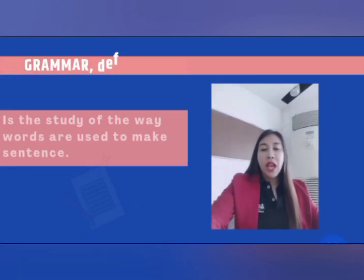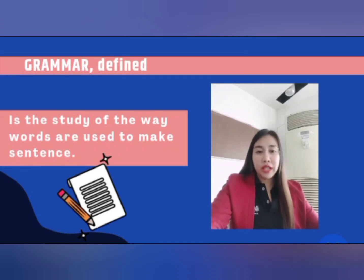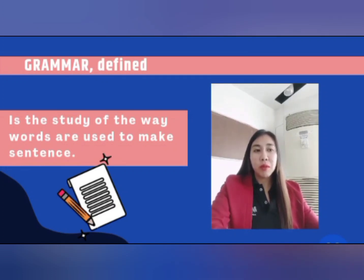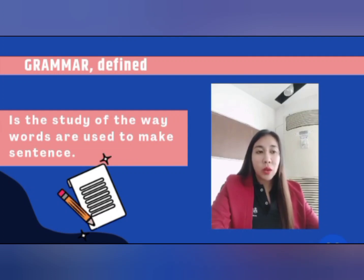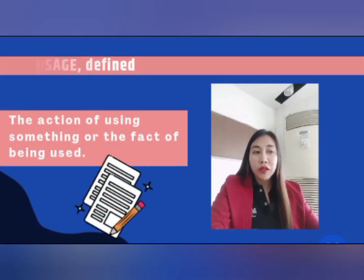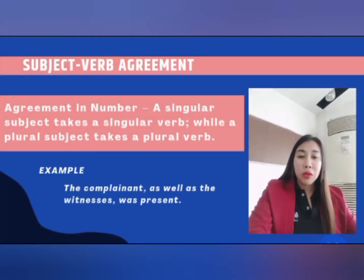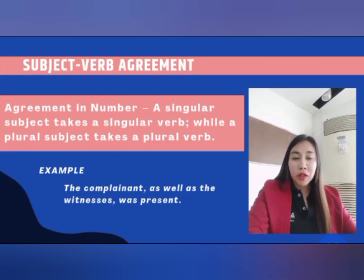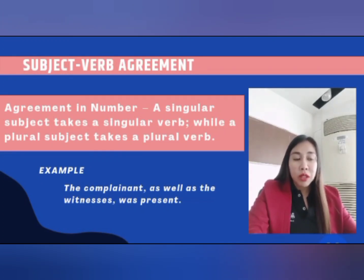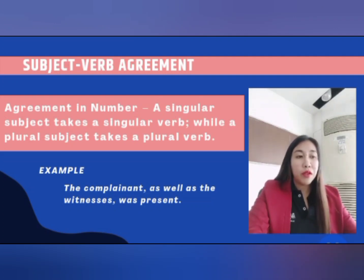Good afternoon. Our topic for today is grammar and usage. The purpose of this study is to be able to apply the basic rules of grammar in one's writing. Before we continue, let's first define grammar and usage. Grammar is the study of the way words are used to make sentences, and it also teaches us how commas and semicolons are supposed to be used. Usage is the action of using something or the fact of being used. We will be tackling under grammar and usage five different types. Let's go with subject-verb agreement — it is defined as: a subject and its verb must be both singular or both plural. A singular subject takes a singular verb while a plural subject takes a plural verb. For example: 'the complainant as well as the witness was present.'